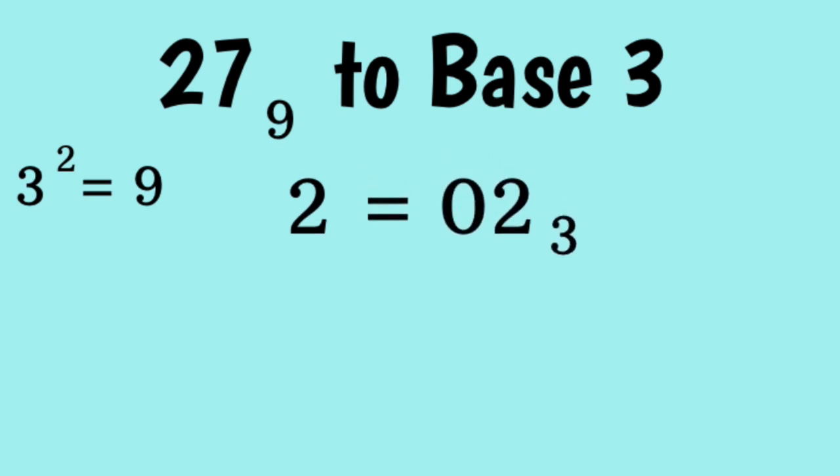2 is equal to 02 base 3. And since we must convert it into a block of two digits, we add the 0 in the beginning. Now, we note that 7 is equal to 21 base 3. Putting these two together, we get the final answer of 221 base 3.